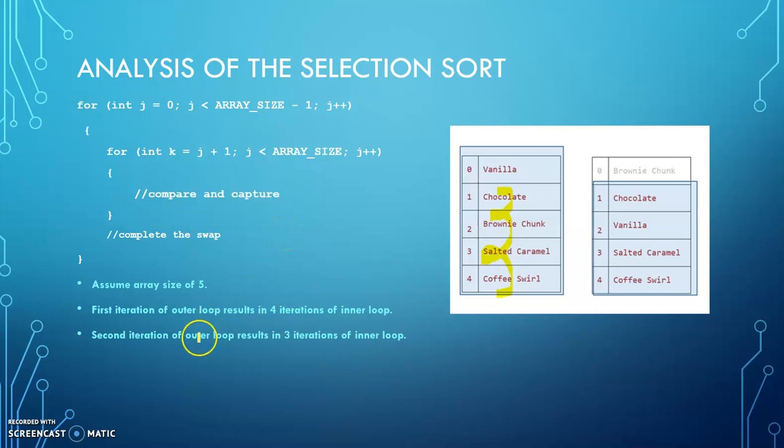The second iteration of the outer loop, this is the starting position, and I'm looping through the remaining three. So I get three iterations of the inner loop. So the third iteration of the outer loop, which is not pictured here, but you know what's going to happen, I would loop through the remaining two. So I get two iterations of the inner loop, and then finally, last time through.